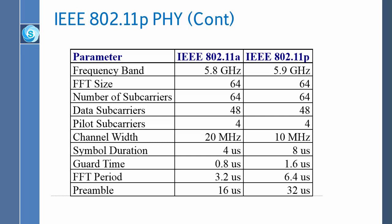The preamble is a predetermined set of bits — not random — sent at the beginning of a frame so that other devices can synchronize. It looks something like 101010101010101011111100. This preamble is 32 microseconds long in 802.11p, allowing more time to synchronize.